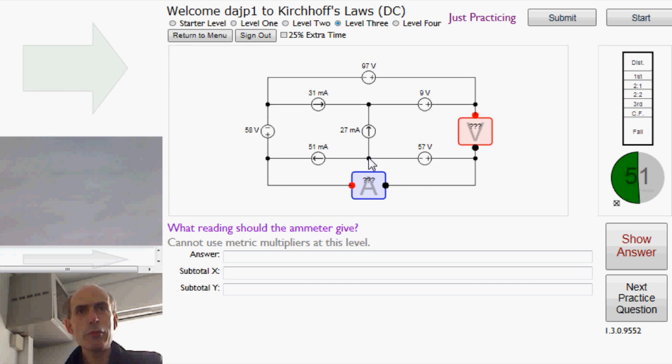we have 27 milliamps going up and 51 milliamps going there. So apply Kirchhoff's current law to that node in the circuit there.